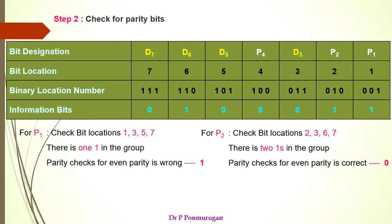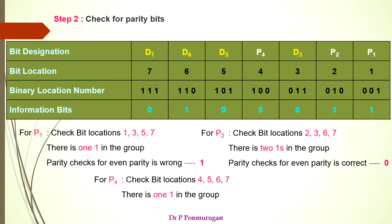For P4, we check bit locations 4, 5, 6, and 7. This group has only a single 1. So it does not satisfy the even parity condition, and we place a 1 here.